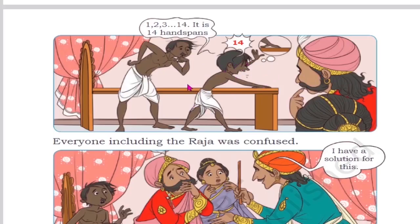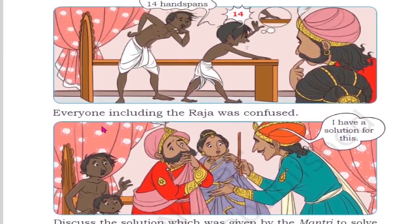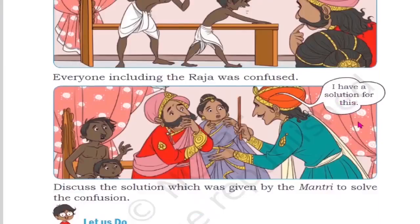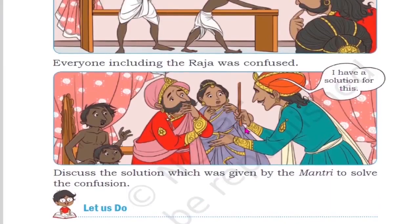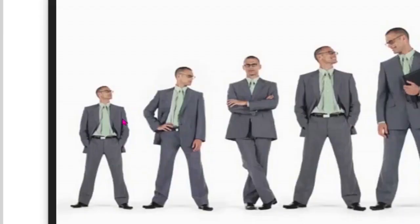Everyone is confused - the king, the carpenter, and the helper all get different measurements. The king is confused. Then a minister comes forward and says: I have a solution for this. This is the solution given by the minister to solve the confusion. The problem is that everyone's handspan is a different size, so the measurements come out differently.